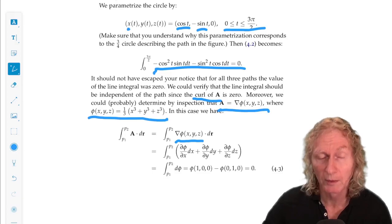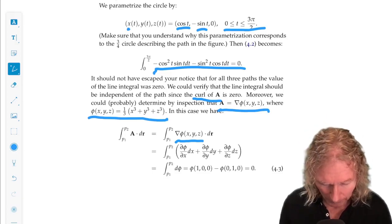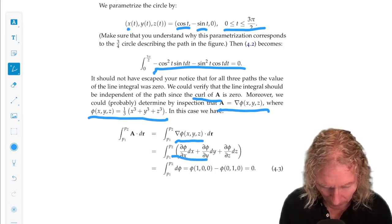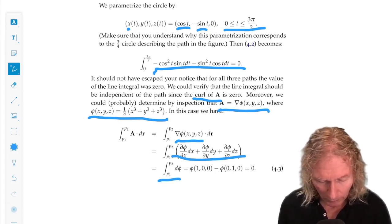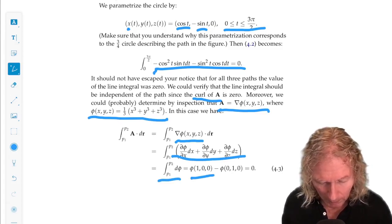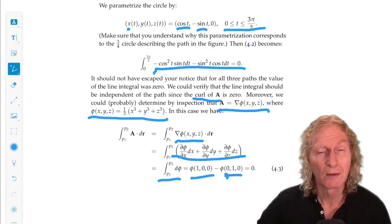But, if you plug in the definition of gradient, remember that dr is dx i plus dy j plus dz k. Remember what it's supposed to give you, a total differential, total derivative. So, now we just evaluate phi at P1 and phi at P2, and we see they're equal, so we get 0.